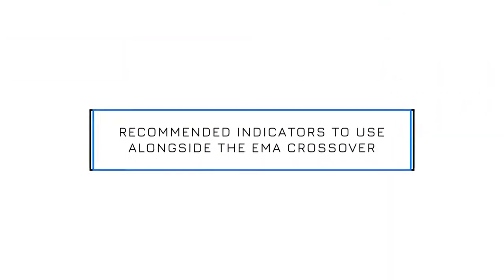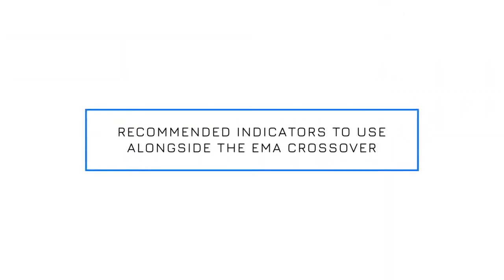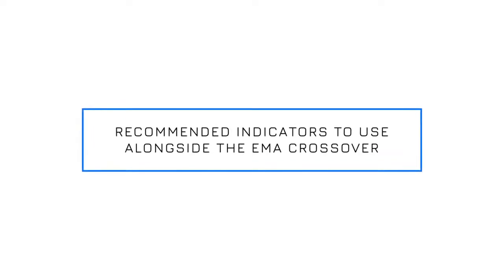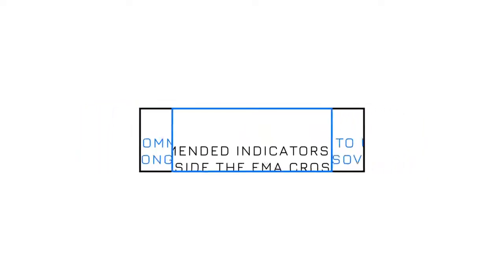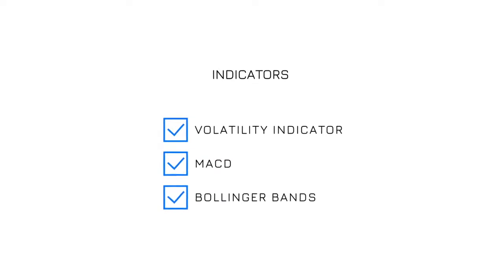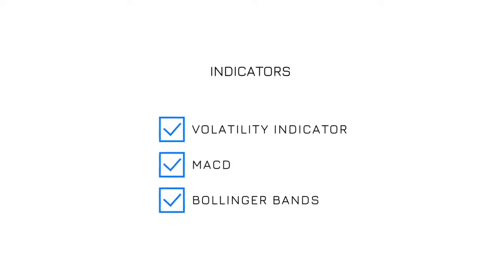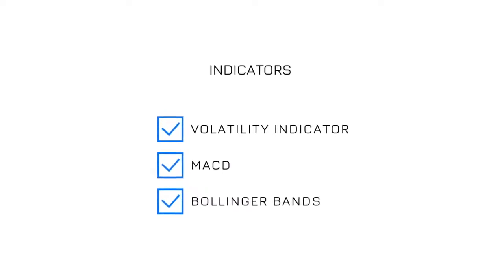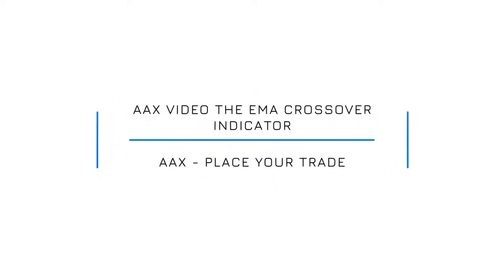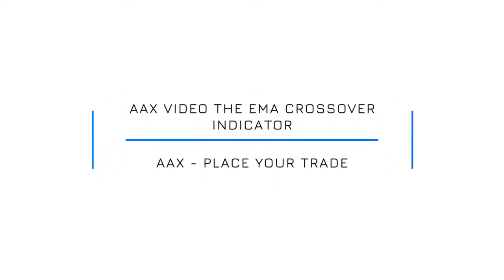Now that we have covered the EMA Crossover Indicator, let's have a look at other indicators which work well alongside it. We have three indicators: the volatility indicator, the MACD, and the Bollinger Bands. When used alongside the EMA Crossover, it decreases the chance of the breakout being false. This was an AAX video on the EMA Crossover. Place your trade on AAX.